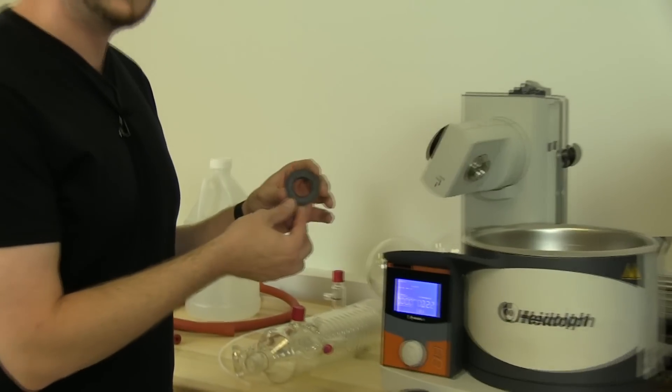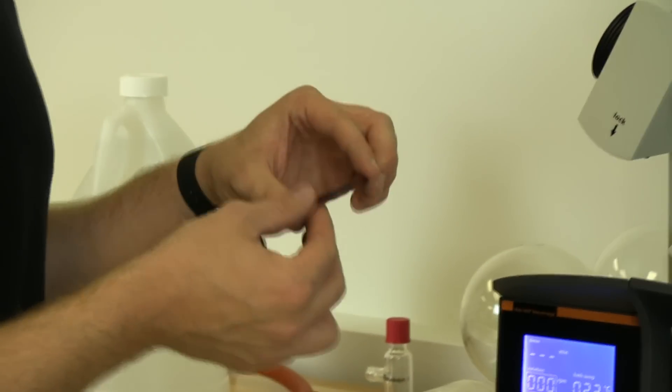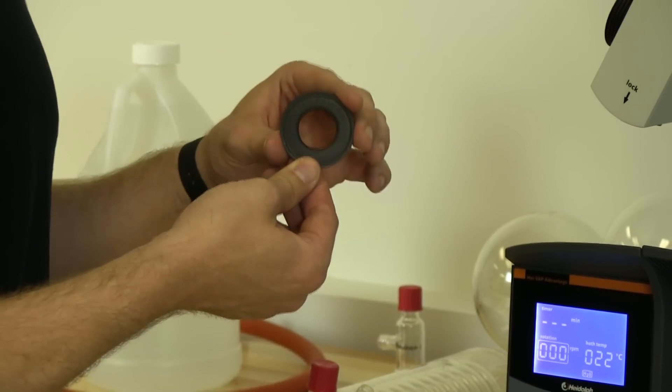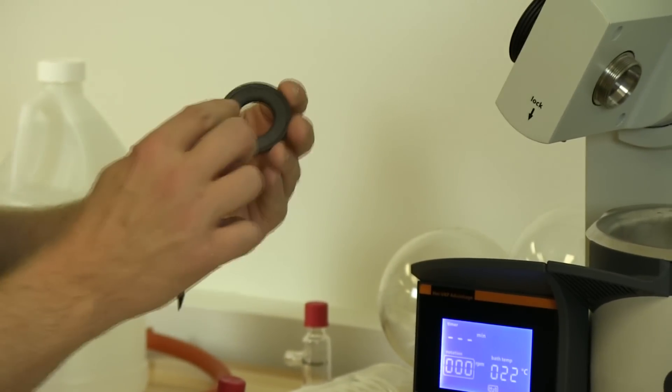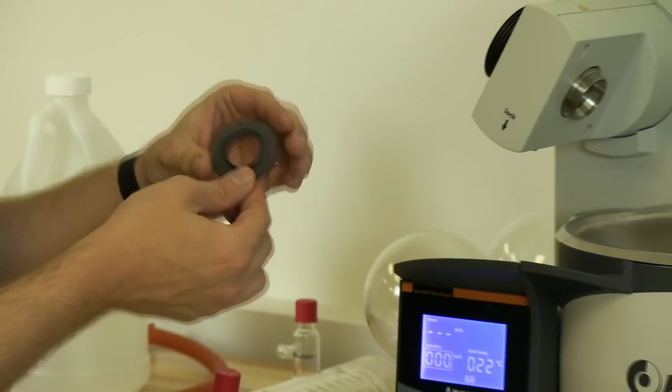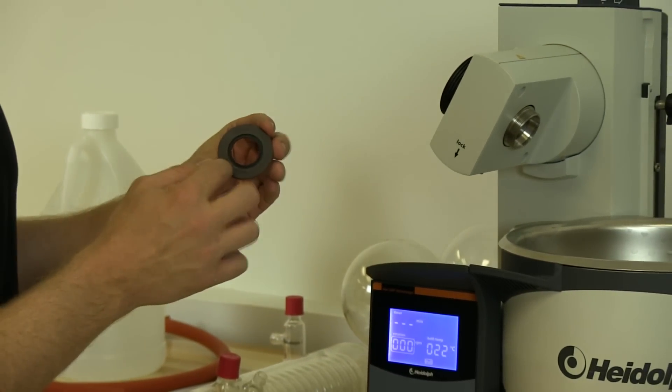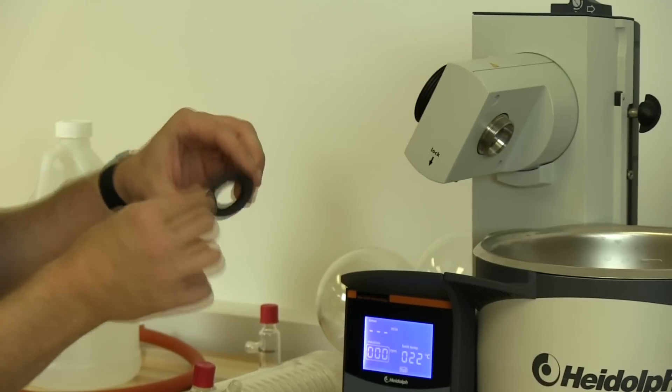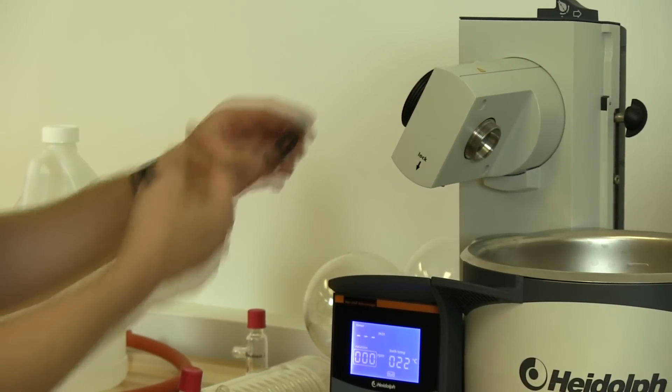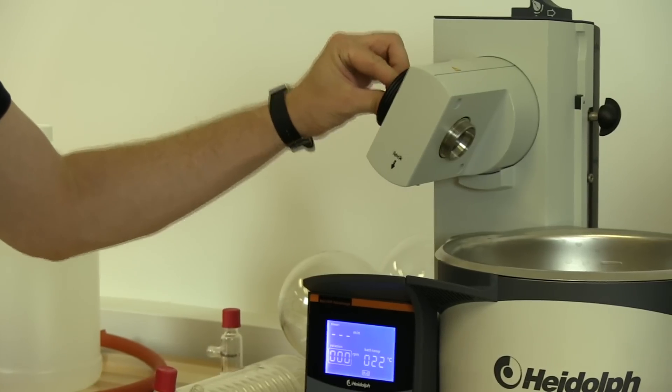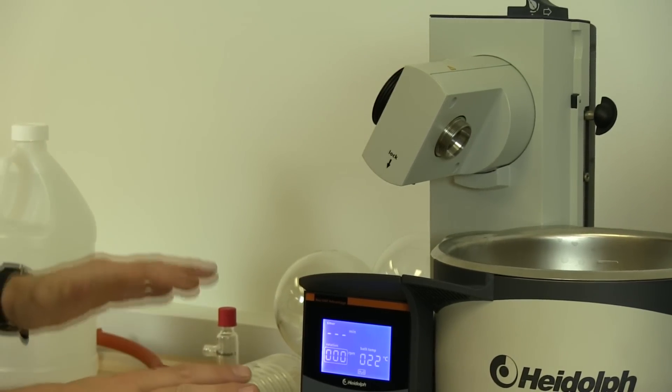This is the seal, the O-ring for connecting the condenser to the arm here. One side says condenser side, one side says drive side. Very important that you pay attention to that. The drive is that way, the condenser is that way. Pop that into the arm, fits in there actually pretty nice and loose.